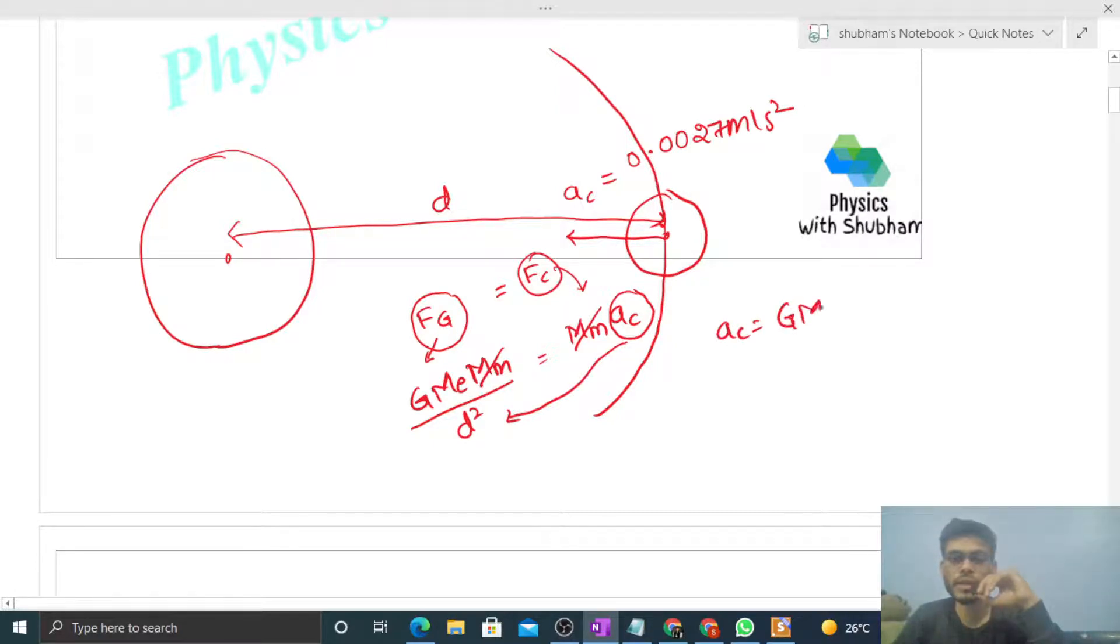Now if this moon stops, then what force will act on it? Gravitational force of attraction, whose magnitude will be capital G times mass of the earth times mass of the moon divided by D squared.